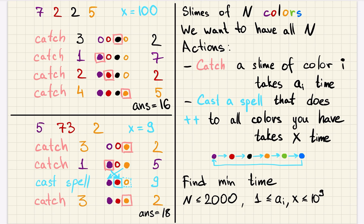We have slimes of N different colors and we want to have all N colors. To achieve that we can do two types of actions. First one is to catch a slime of color i — we can choose i and that action takes a_i time, which depends on the color of the slime we want to catch. The second action is to cast a spell that increases by one the colors of all the slimes we have previously caught, modulo N. So we have a cyclic order of colors and we shift each color to the next one. Casting one spell takes X time. We want to find the minimum time to achieve the situation when we have slimes of all N colors.